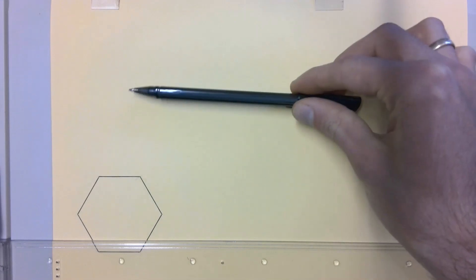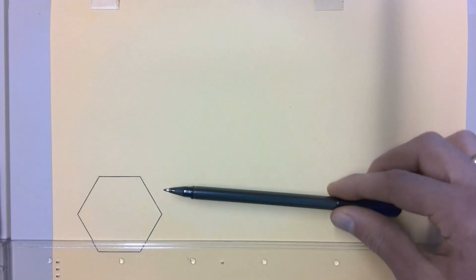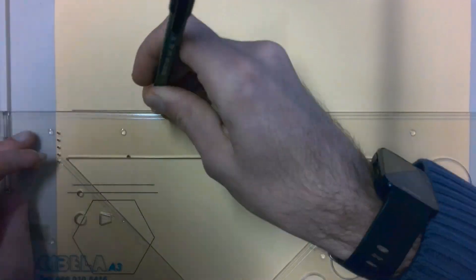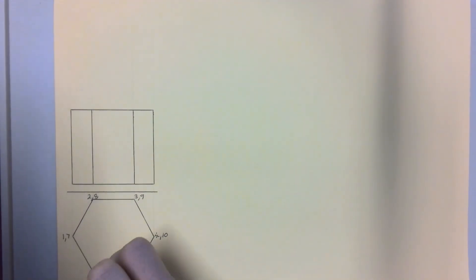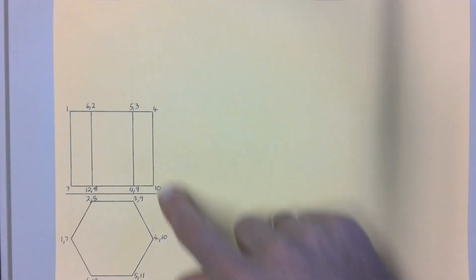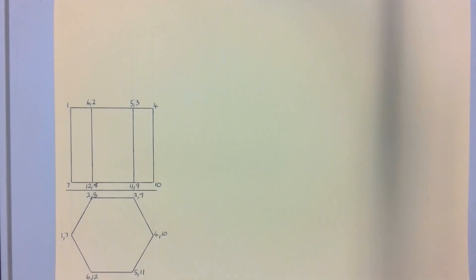Once we have our top view drawn, the next step is to go and draw the front view of this top view, which you've already learnt how to do. So we're going to quickly draw in that front view, and then we'll look at how to use the top view and the front view to draw the development of the shape. Now we have the front view, and we've labelled both our top view and our front view, and now we're going to look at drawing the development.